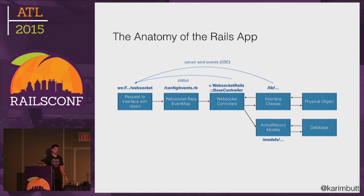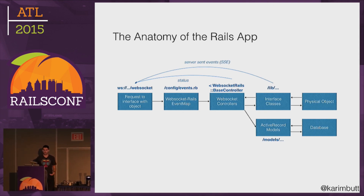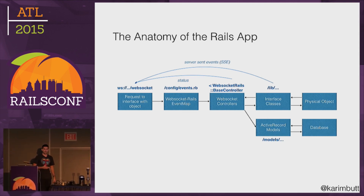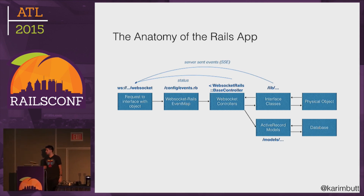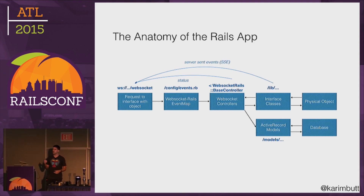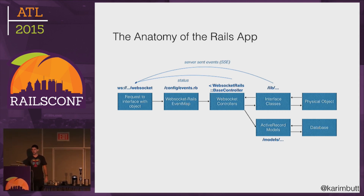The anatomy of the Rails app: you get requests to interface with an object from the front end. That goes to the event map, which is just like a Rails route but you're mapping events. That then goes to the WebSocket controllers, and the controllers do two things — they work with your models to save that interaction to the database, because I want to analyze motions and when lights were on and off, and they also interface with the physical object itself.